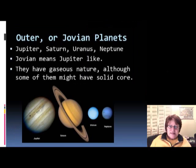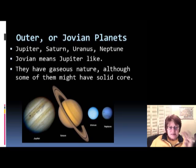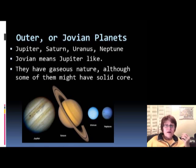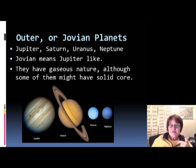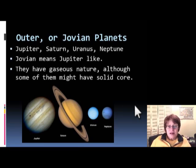The outer or Jovian planets are Jupiter, Saturn, Uranus, and Neptune — those are the four that count as planets in the outer solar system. They are called Jovian because they resemble Jupiter. They are mostly gas, though we believe some may have solid cores. None of them are suitable for us because we cannot walk on gas.